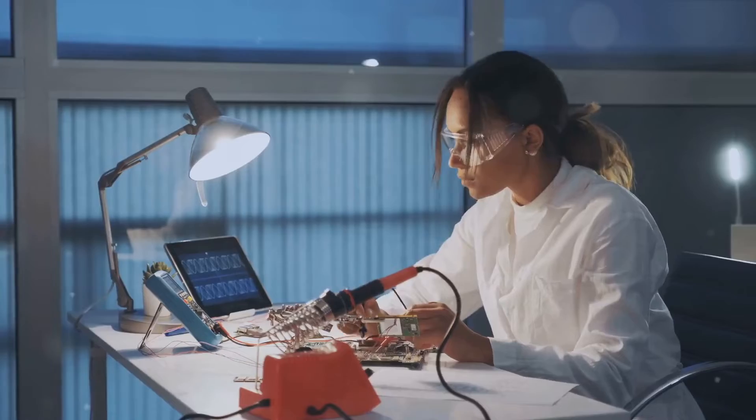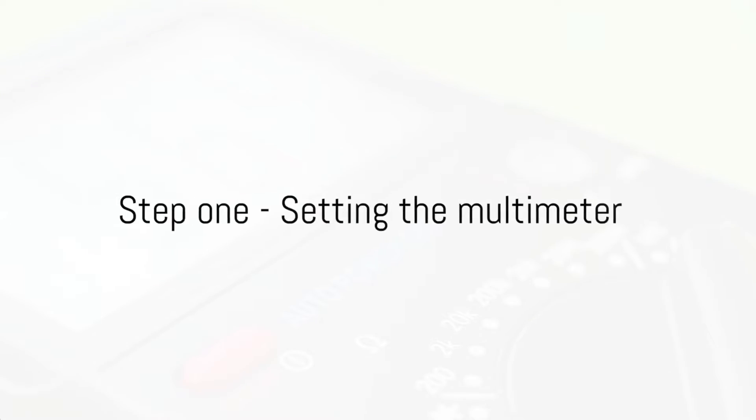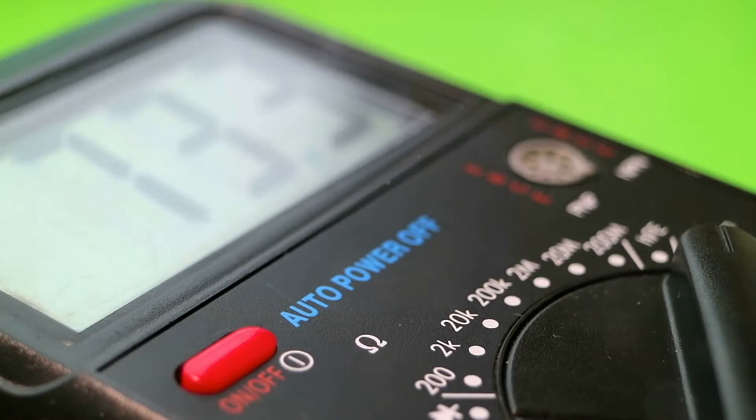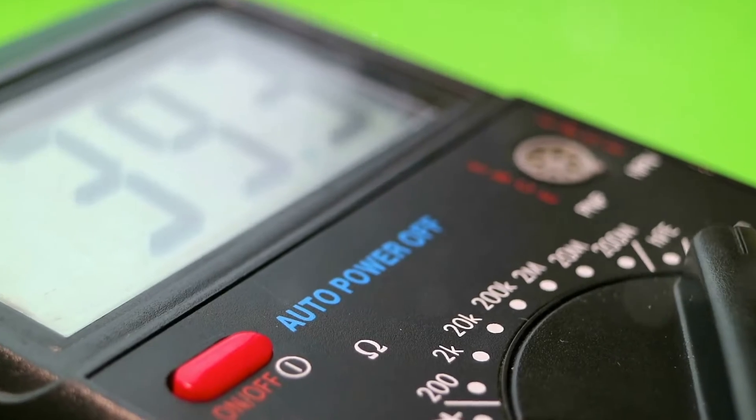Now it's time to walk you through the steps. Step 1: Kick off by setting your multimeter to the ohms or resistance mode. This will enable us to measure the resistance of the load cell.